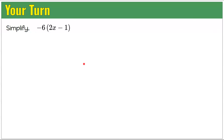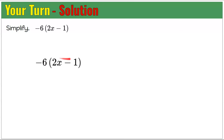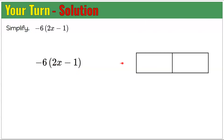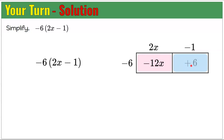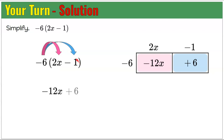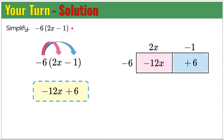Your turn. Pause the video and do your best work. Welcome back. Here is our solution. Using the area model: factor negative 6 outside, terms 2x and negative 1 inside. Negative 6 times 2x is negative 12x. Negative 6 times negative 1 is positive 6. Horizontally: negative 6 times 2x is negative 12x, and negative 6 times negative 1 is positive 6. So negative 12x plus 6 is our equivalent simplified algebraic expression.